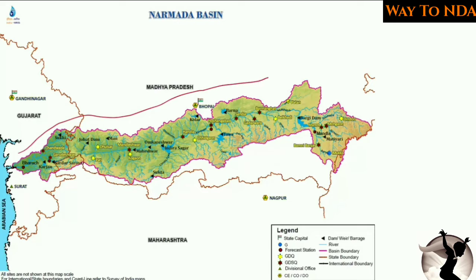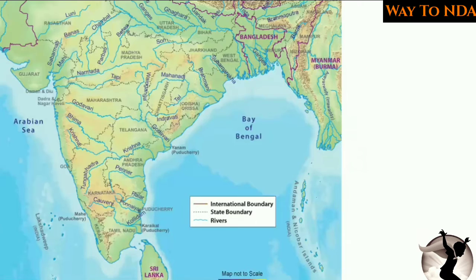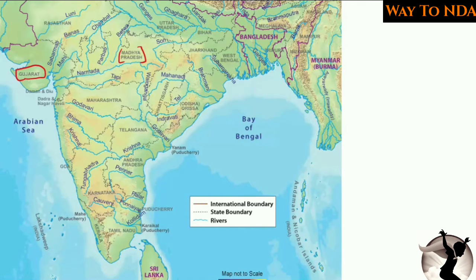Looking at the actual basin of the Narmada river, you can see it flows through Madhya Pradesh and Gujarat. It touches the boundary of Maharashtra but does not flow through Maharashtra. So the states through which Narmada flows are Madhya Pradesh and Gujarat.